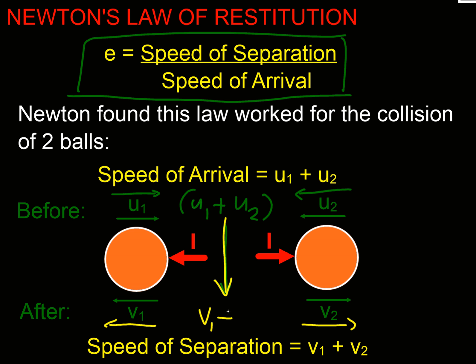They're going away from each other faster, so the distance between them is growing quicker, and therefore the velocity between them is greater, v₁ plus v₂. So as long as we understand that our speed of arrival is the combined speed of the two balls, and our speed of separation is the combined speed of separation of the two balls, Newton's law of restitution works.